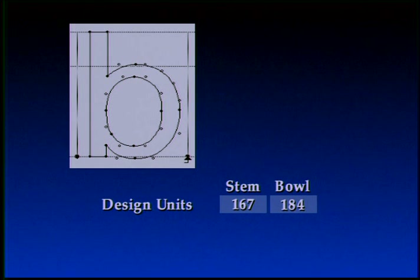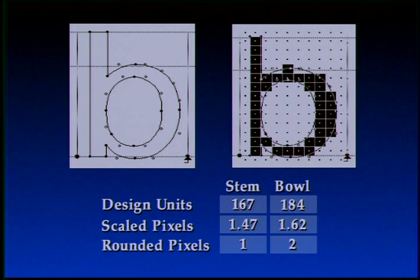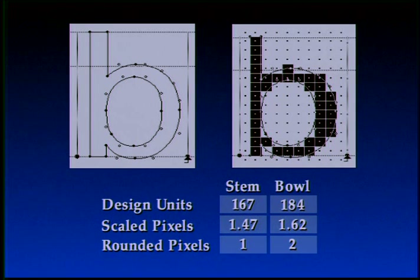The next problem is the preservation of similarity between character features. Let us look at this b. Its vertical stem on the left has the width of 167 design units in the digitized outline. Its round ball on the right has the width of 184 design units. At 18 pixels per em, the stem is scaled to 1.47 pixels, which results in 1 pixel on the display. The ball is scaled down to 1.62 pixels, which rounds to 2 pixels. In the digitized outline, there is a difference of about 10% between the stem and the ball. In the bitmap, the ball is twice as thick as the stem — a very ugly situation.